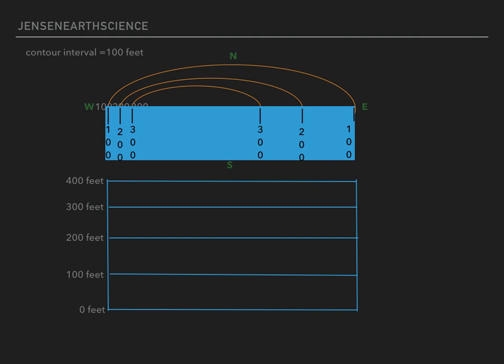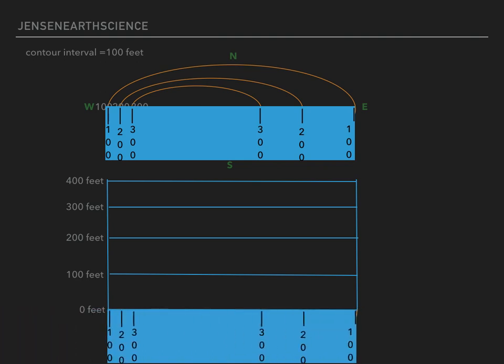The next step is I take that piece of scrap paper and I put it at the bottom of my graph that I'm drawing my profile on. So here's the same thing that we just marked off at the bottom.